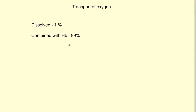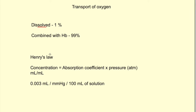Oxygen is transported in blood in two forms. One is dissolved in blood itself — that is the dissolved form — and the next is combined with hemoglobin. The dissolved form is responsible for only one percent of oxygen transport, and 99 percent of oxygen is transported in combination with hemoglobin.